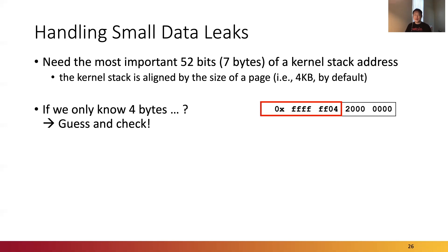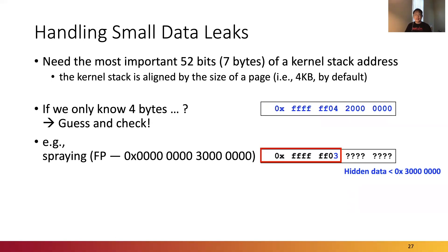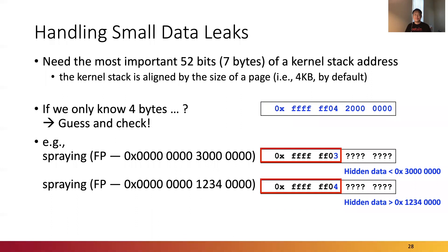By leveraging this unrestricted behavior of a BPF program, we deal with such small leaks using the guess and check method. For example, if the value of the frame pointer is the hex value as shown in the slide, and if we know only the first 4 bytes, we can start guessing by subtracting an arbitrary value. After the subtraction, if the last byte of the known frame pointer value changed from 4 to 3, we can know that the hidden data is smaller than the arbitrary number. We then subtract another arbitrary number smaller than the previous one, repeating this reasoning procedure until we obtain the kernel stack base address.